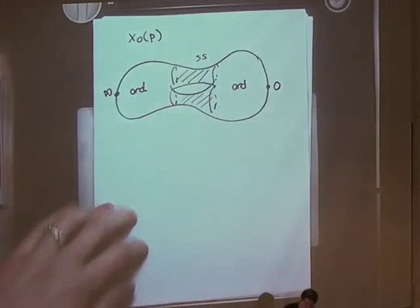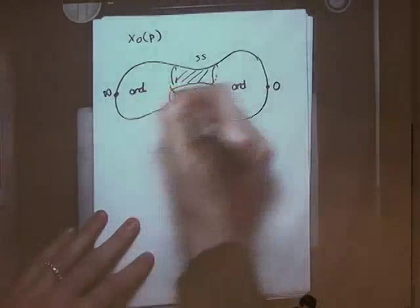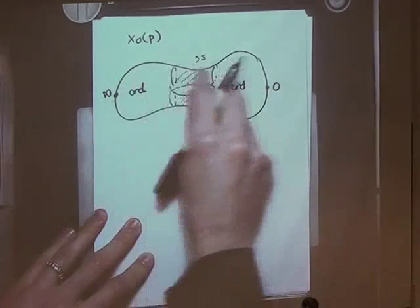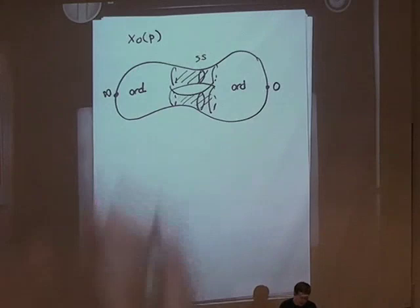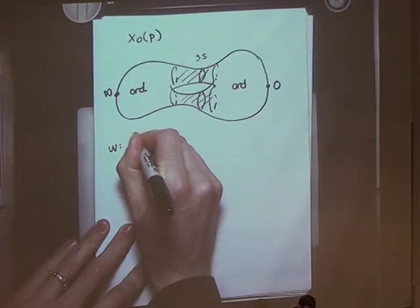We can define over-convergent forms if we somehow extend a region far enough into the supersingular locus. In fact, anywhere into the supersingular locus is good enough, but we can go further or less far depending on the radius of convergence. One picture we have on X0p that we don't have on X01 is that X0p has a nice involution called the Fricke involution. It's easy to describe on a pair (E, subgroup).